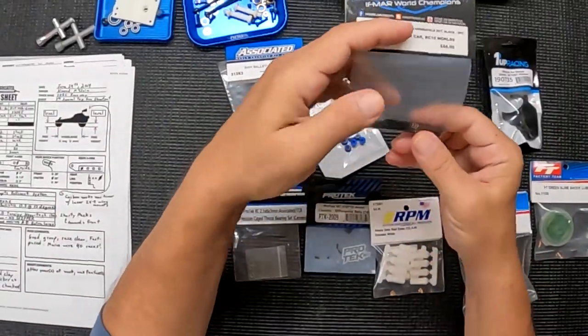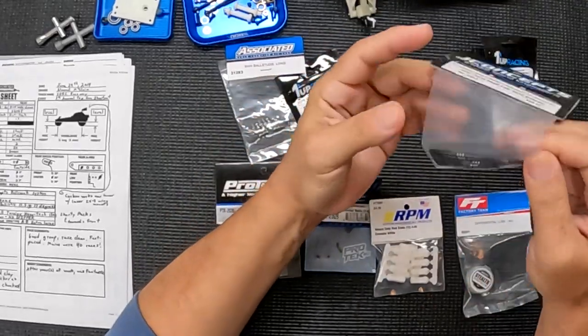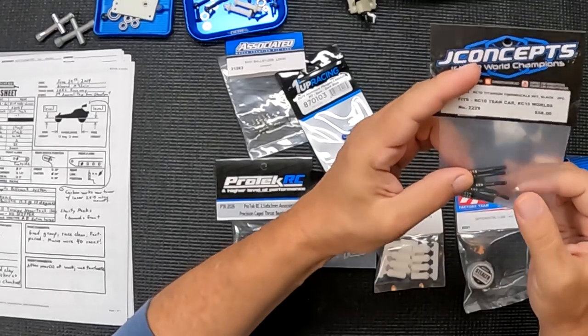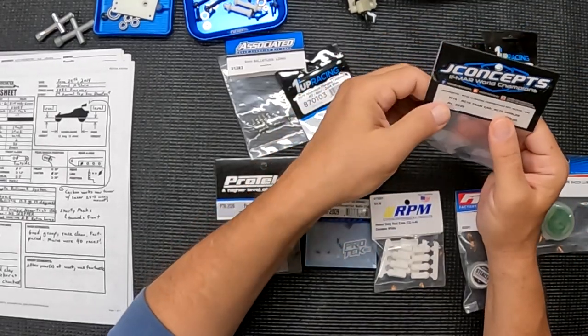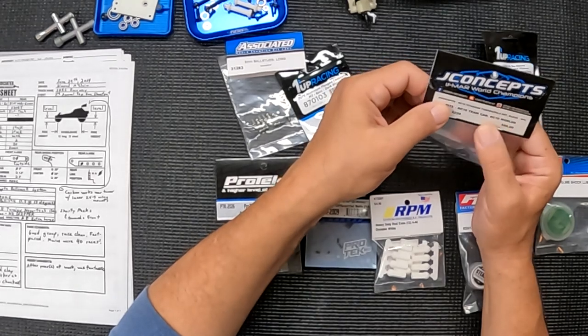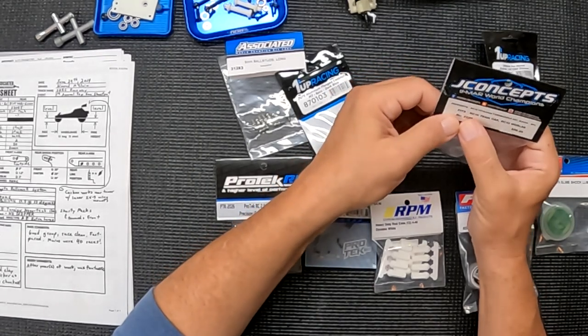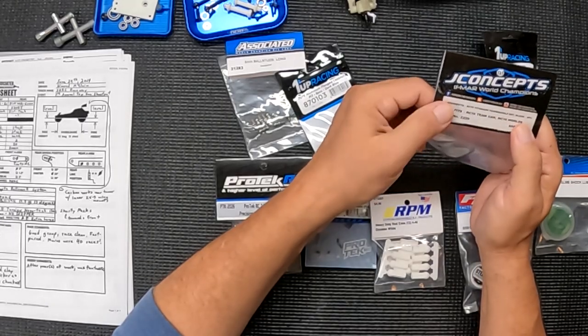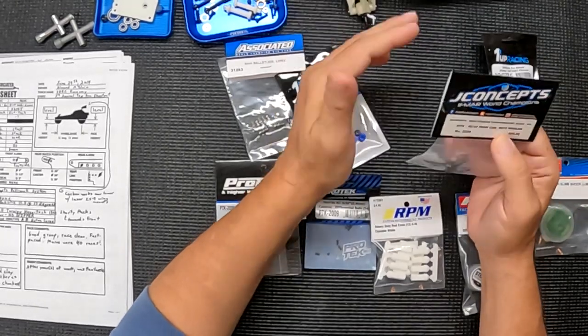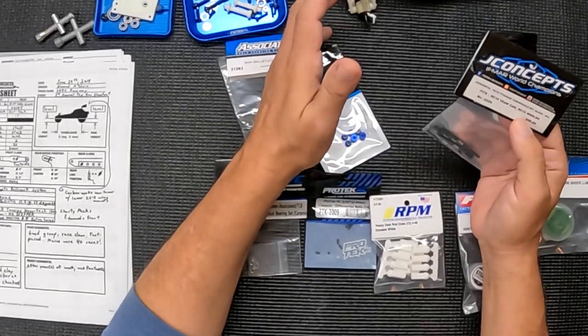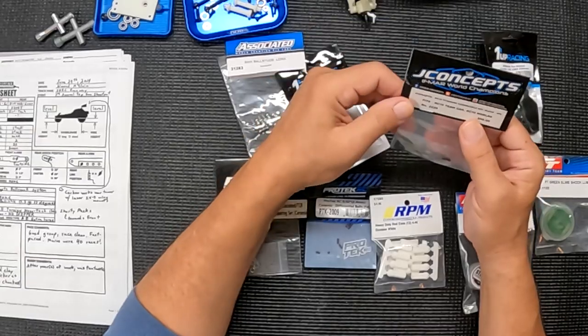They seem to come in the right sizes. This is a J Concepts product, made of titanium, and fits RC10 Team Car, RC10 Worlds. Those are variants on the original gold pan, but they include the same parts so everything should fit just fine.